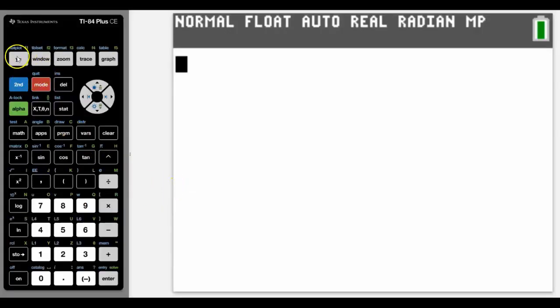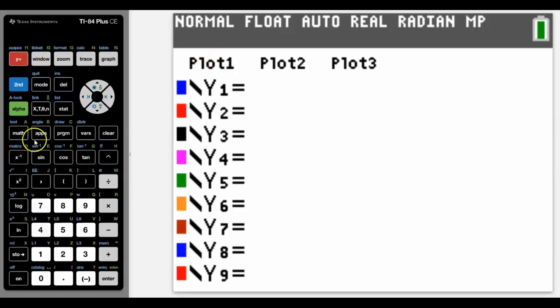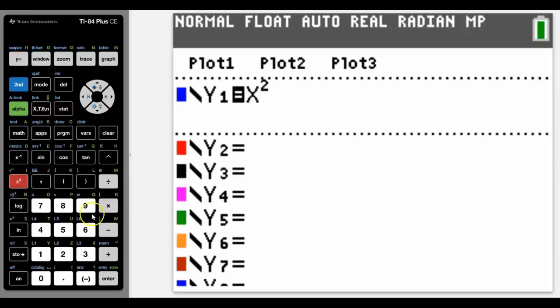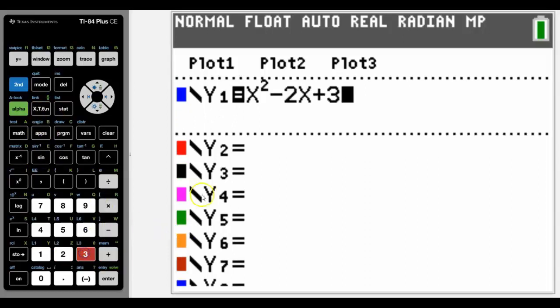To plot any graph, we need to go into Y equals, and as I mentioned, we're going to do a quadratic. This is the quickest way to get the X, although you can use alpha X in green here, but it's much quicker just to use the button next to alpha. In this case, let me just go any quadratic; it doesn't really matter. Make sure we use minus, not the negative button, and then let's press graph.